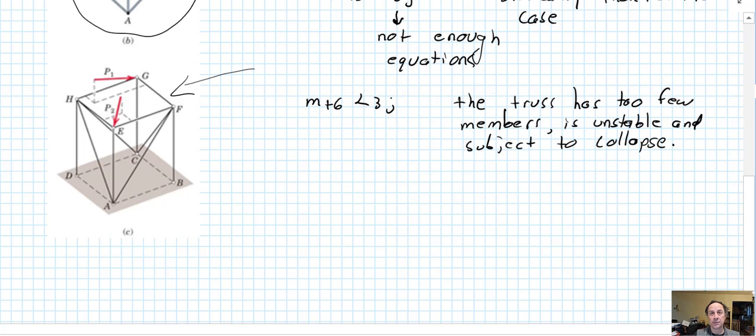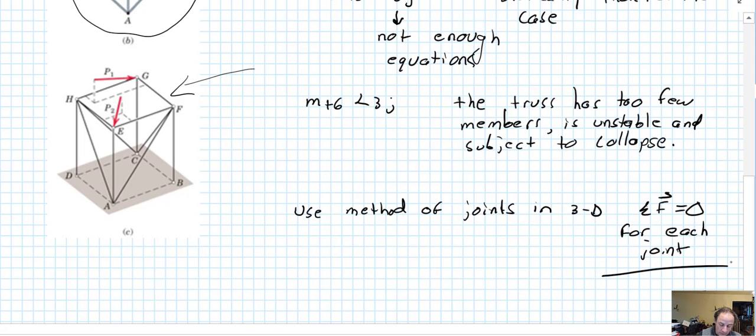There's no new methods for space trusses. We're using the method of joints, just extend it to 3D. Sum of the forces vectorially equals 0 for each joint.